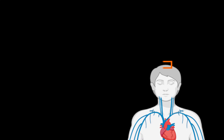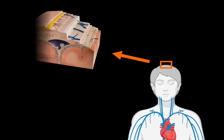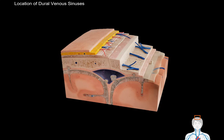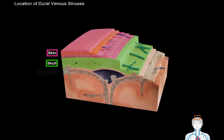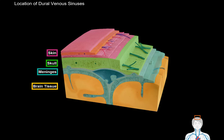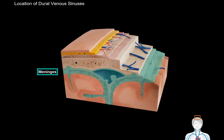We can start by zooming in on a figure and taking a small section of the skull in order to see all the layers — from the skin down to the brain tissue. First we have the skin and all the dermal layers, then underneath that we have the skull, then the meninges, and then the cerebral tissue.